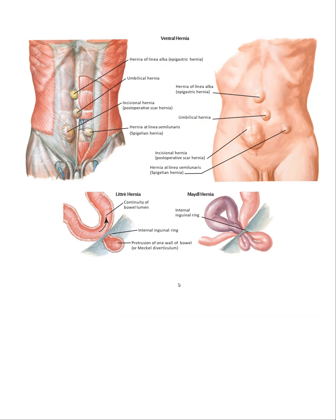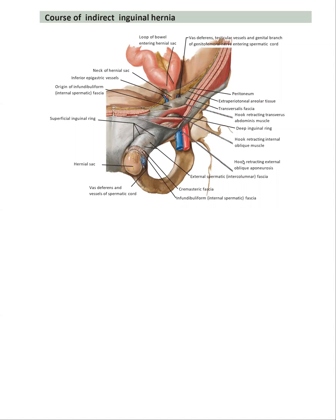Now we are going to demonstrate further the Bassini repair of indirect inguinal hernia. We will start with an illustration of the anatomy of the inguinal canal. As you see here, this is the deep inguinal ring, a defect in the fascia transversalis, and it will descend all through with the spermatic cord until reaching the superficial inguinal ring, which is a slit-like structure in the external oblique aponeurosis.